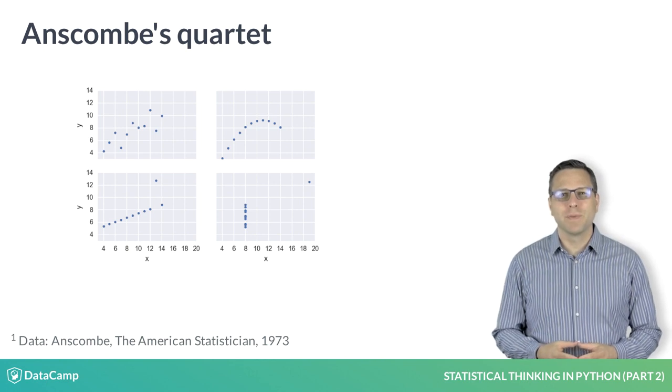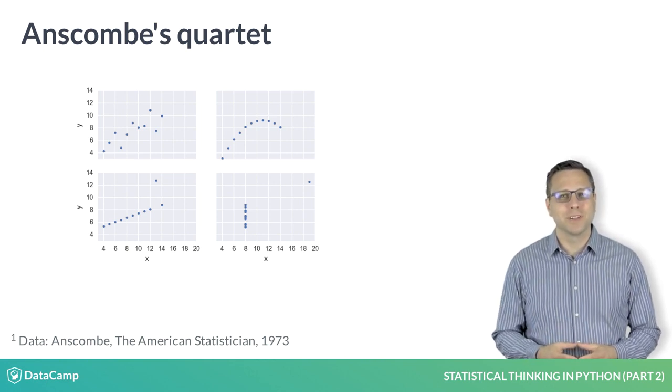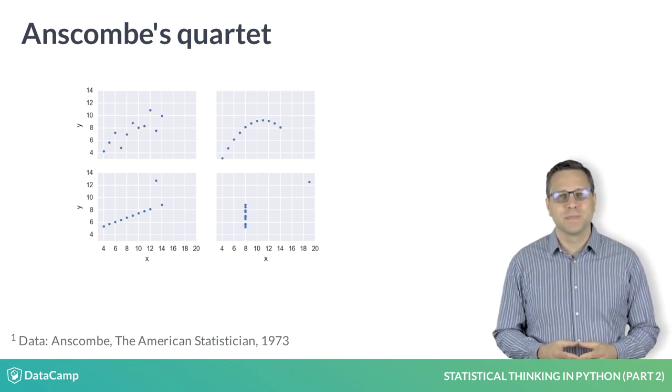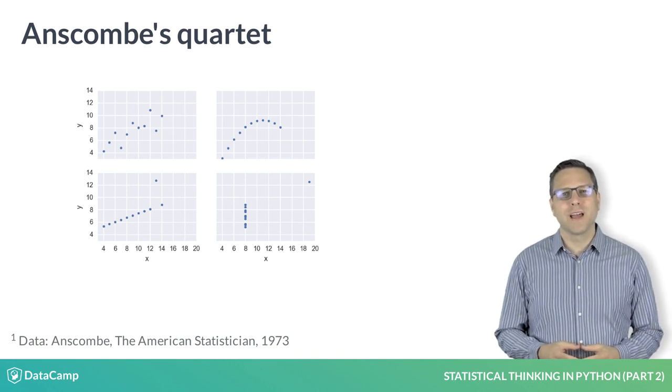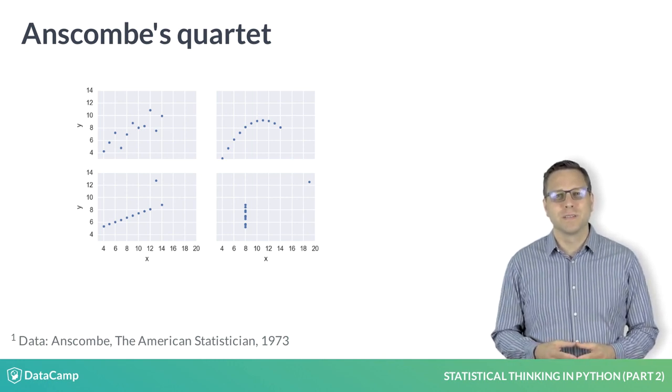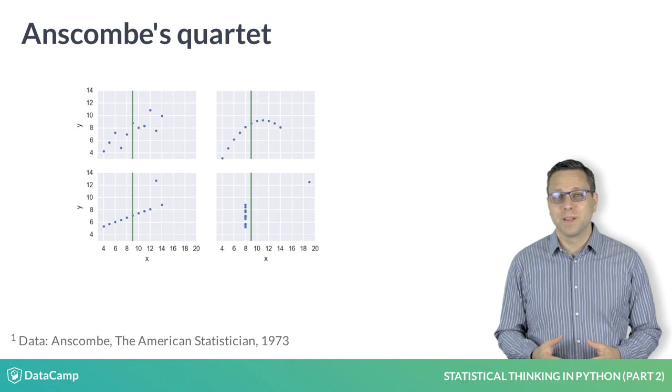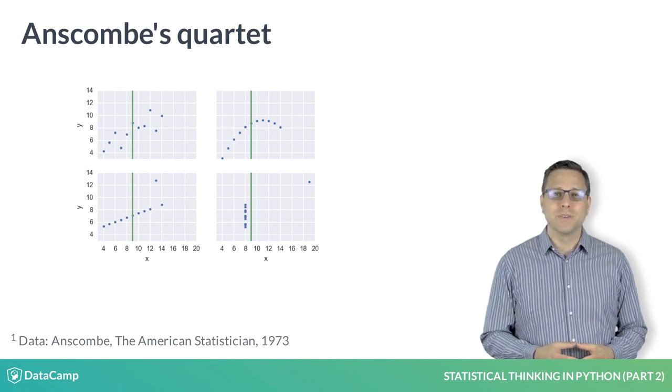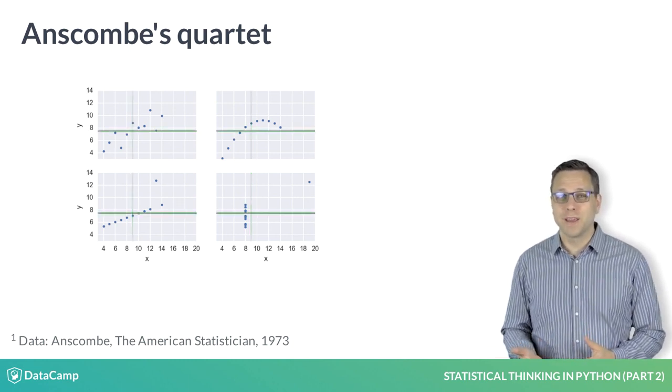That point becomes clear if we blindly go about doing parameter estimation on these data sets. First, let's look at the average X values for the four data sets. They are all the same. How about the average Y values? Again, all the same.